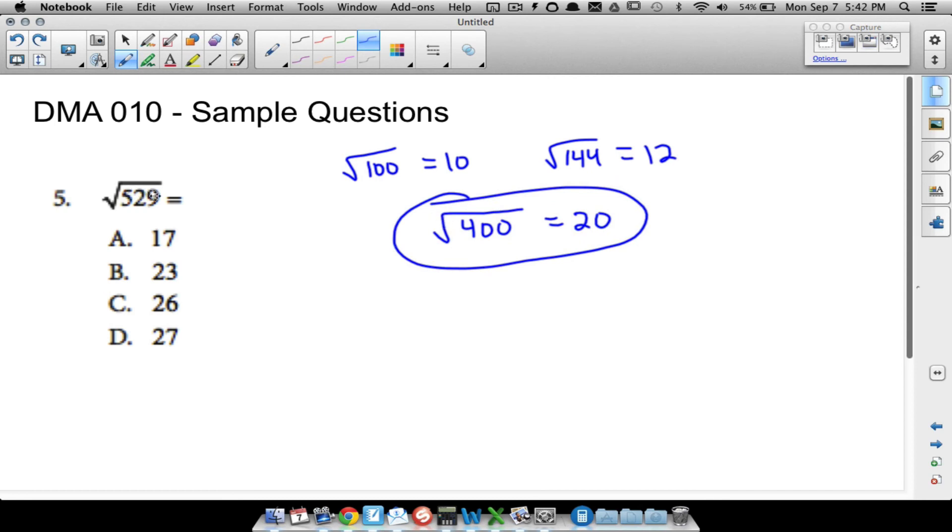Square root of 529 is going to be bigger than the square root of 400, because all we're trying to find out is what number times itself is going to give us 529. 10 times 10 gives us 100, so the square root of 100 is 10. 12 times 12 is 144, so the square root of 144 is 12. 20 times 20 is 400, so the square root of 400 is 20. As these numbers get bigger, our answer gets bigger. Since 529 is bigger than 400, our square root should be bigger than 20. Therefore we can automatically knock out that one.